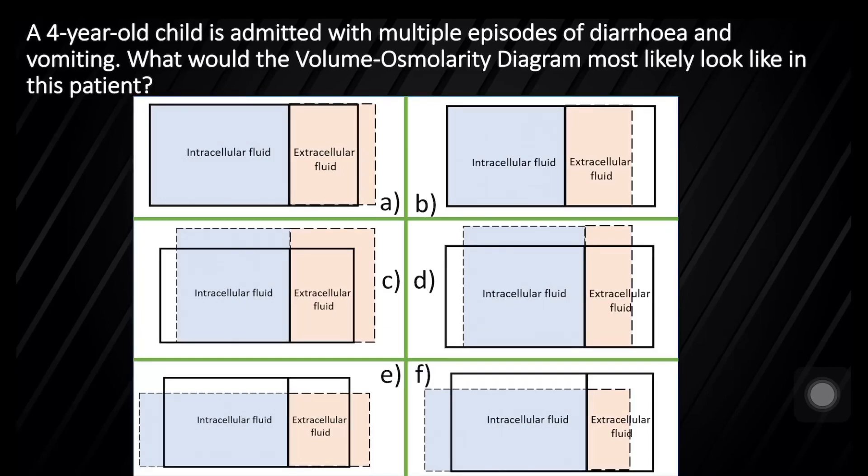First question: a 4-year-old child is admitted with multiple episodes of diarrhea and vomiting. What would the volume-osmolarity diagram most likely look like in this case? It's a child with diarrhea and vomiting, so there is loss of fluids.